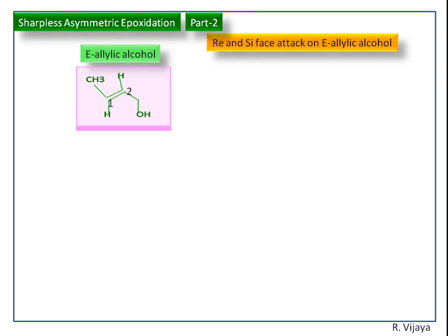Now we assign the Ray and Cyphase. Let us consider the first sp2 carbon atom. Here the double bond carbon atom has higher priority than the methyl group, then hydrogen. The priority rotates in the anti-clockwise direction, so we get Cyphase attack.